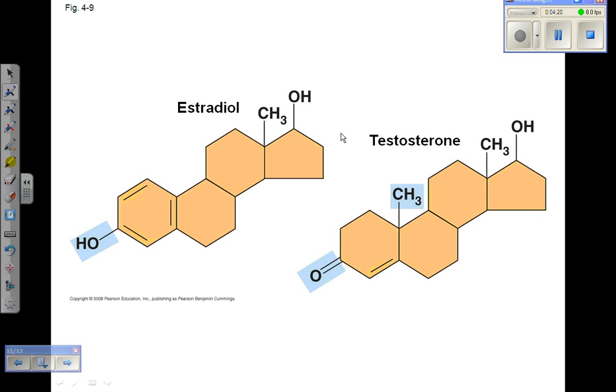Various chemical groups can replace the hydrogens that might otherwise bind to the carbon skeleton, participating in chemical reactions or determining the structure and therefore the function of the organic molecule. Because of their role in determining the functional properties of an organic molecule, these chemical groups are called functional groups. Each functional group participates in chemical reactions in a characteristic way, thus giving defined properties to their associated carbon skeleton.